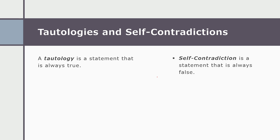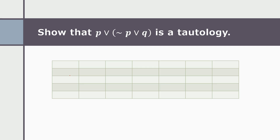A tautology is a statement that is always true, and a self-contradiction is a statement that is always false. This one is always false, and tautology is always true.